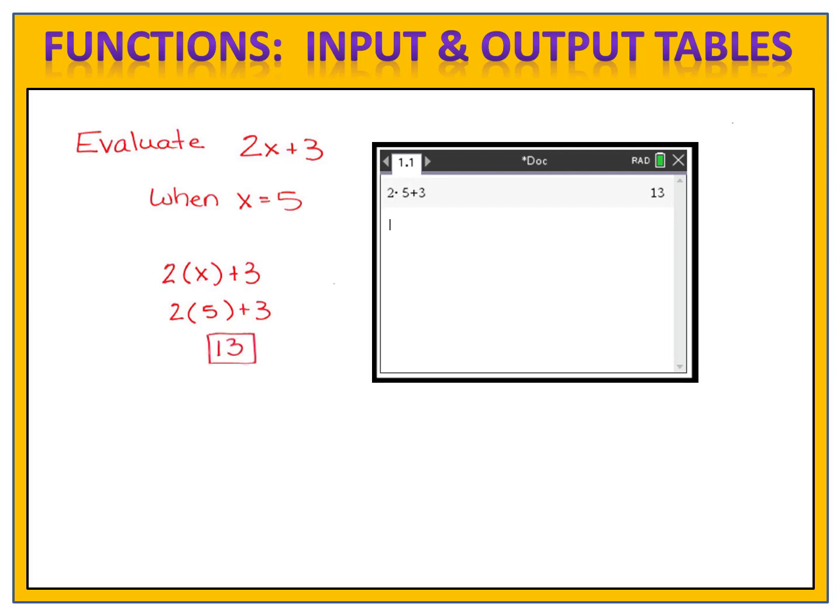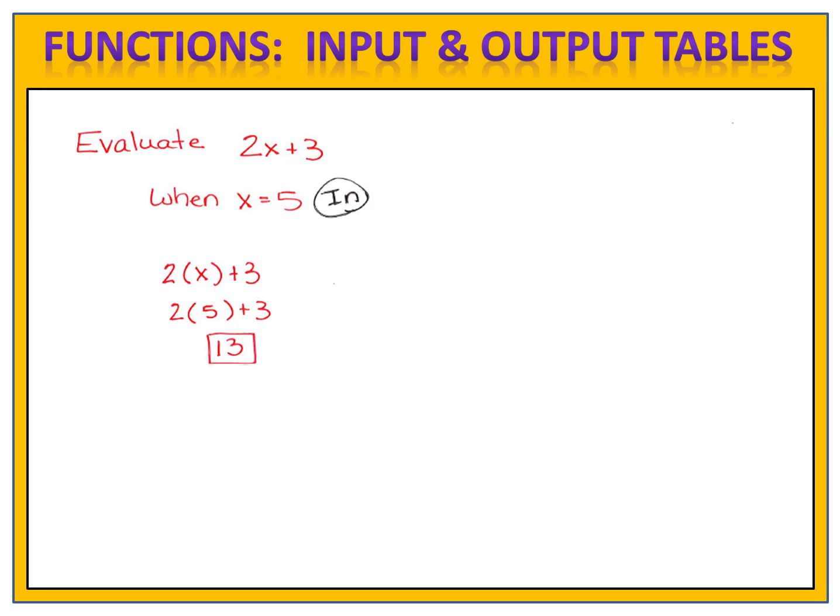So 2x plus 3 is 13 when x is 5. When I input a 5, I get a 13 out. And we can record these values in what's known as an input and output table. Let's make one. We have our input and output table, and when we input a 5, we get an output of 13. Let's record that in there.